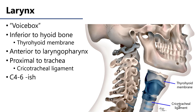The larynx is colloquially known as the voice box. It sits inferior to the hyoid bone, to which it's connected by the thyrohyoid membrane. It's named such because that membrane runs between the thyroid cartilage, which is a major constituent of the larynx, and the hyoid bone. The larynx sits anterior to the laryngopharynx, which is the portion of the pharynx that is contiguous with the esophagus.